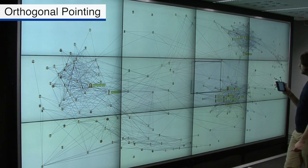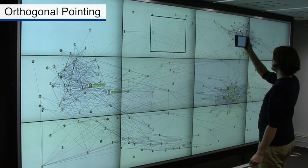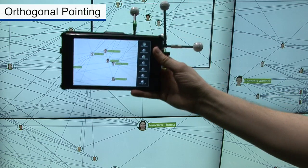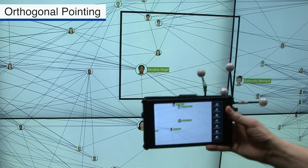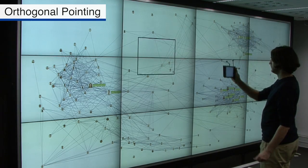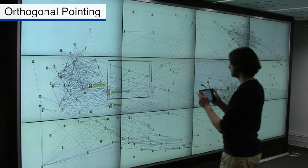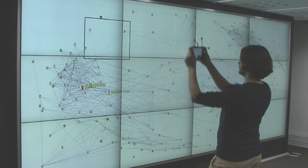For orthogonal pointing, only the position of the device and its orthogonal projection to the wall display is used. While this requires body movement in front of the display, it allows a flexible hold of the device and therefore precise, more stable selection on the display wall.